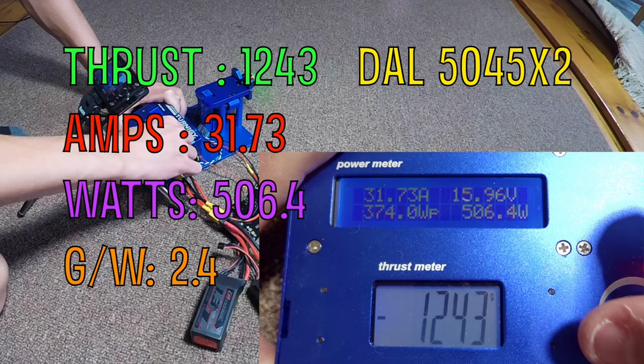On the DAL 5045 dual-bladed Bullnose V2, we had 1243 grams of thrust, still very high, a little less than the tri-blade. We had 31.7 amps, still higher than most but more manageable. On two-bladed props you get more speed, so for racing or speed records, this is a better fit.